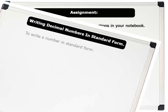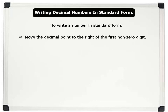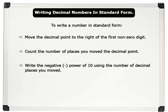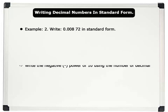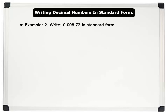To write a decimal number in standard form, we simply do the following: 1. Move the decimal point to the right of the first non-zero digit. 2. Count the number of places you moved the decimal point. 3. Write the negative powers of ten using the number of decimal places you moved. Let us now see an example. Example 2: Write 0.00872 in standard form.